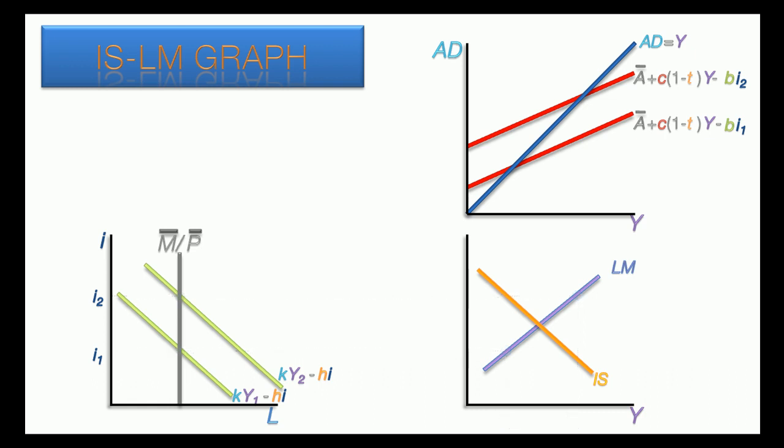The intersection of the IS and LM curves denotes the equilibrium level of interest and income that will have both markets in simultaneous equilibrium.